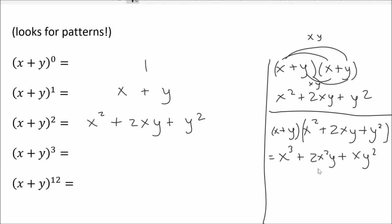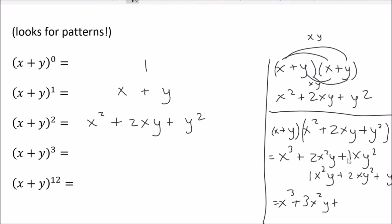Distributing the y gives me x squared y and 2xy squared. Multiplication is commutative, so I'll keep them in alphabetical order — it's just an organizational technique. Then y distributed to y squared gives y cubed. Combining like terms, I get x cubed plus 3x squared y plus 3xy squared plus y cubed.